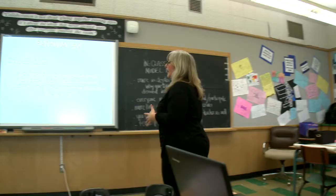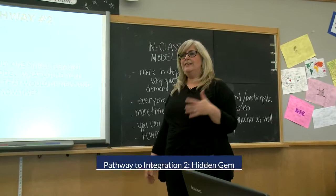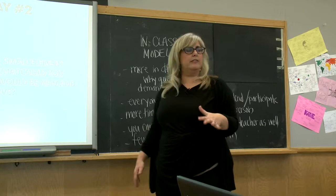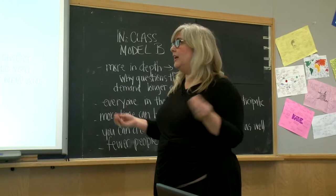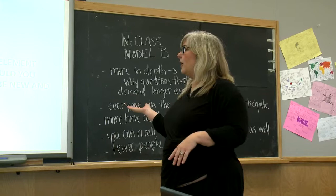The second pathway is called hidden gem. This is a great pathway when we look at the two models and most of the model is not what we would like to keep, but there's something in each model that we value a lot. I'm going to look at model A and model B, and if I could only keep one small element of the model, what could I build from that to create something new?